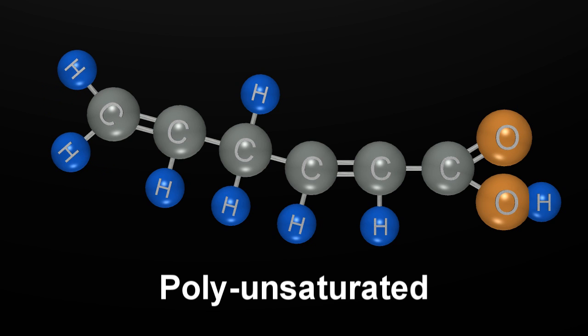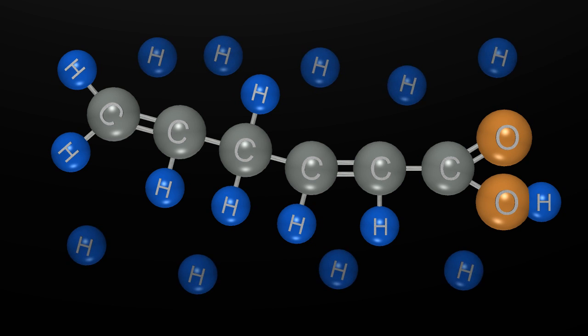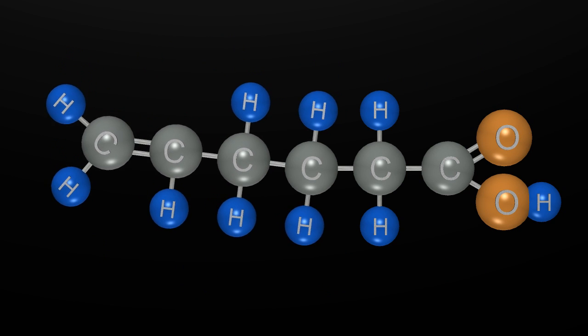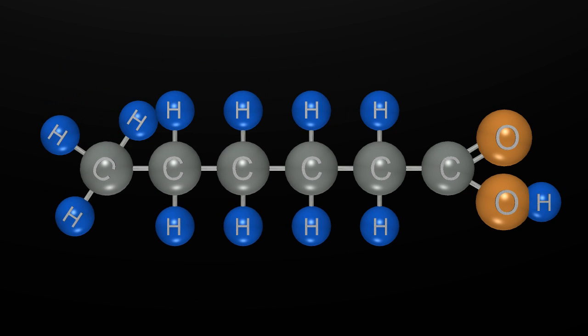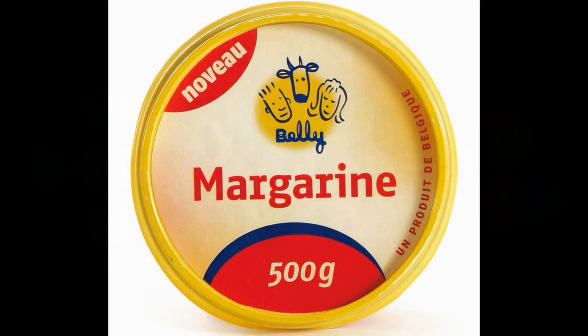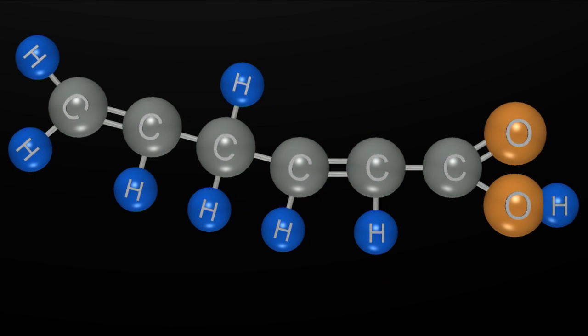If you take this unsaturated fat and heat it in the presence of hydrogen, you can actually saturate or partially saturate that fat and turn it back into a saturated fat. That is the process of hydrogenation, and we use that in the food industry to make shortenings or margarine.